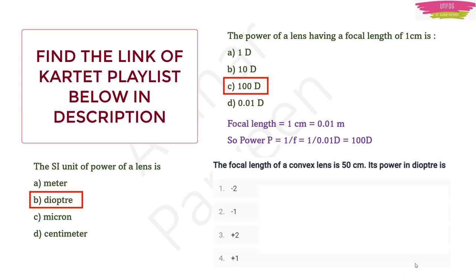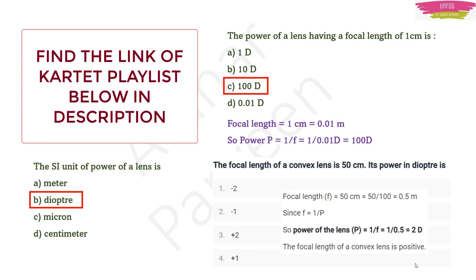Question 3: A convex lens has focal length 50 centimeter. Its power in diopters? Convert to meters: 50 cm = 0.5 m. Power = 1/0.5 = 2 diopter. Since it is a convex lens, power is positive, so the answer is +2 diopter — option 3.